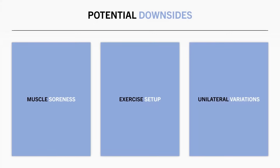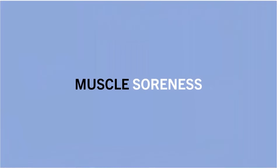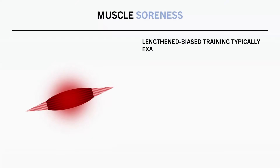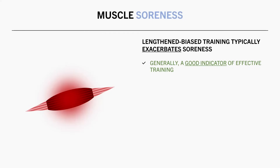So while lengthened-biased training generally seems to be beneficial for muscle growth, there are some potential downsides to be aware of. There are three potential limitations which may apply in certain scenarios. The first is due to muscle soreness — lengthened-biased training typically exacerbates the amount of muscle soreness we experience. In most cases, this is probably a good indicator that the training effectively caused disruption to the target muscle and provided a good hypertrophic stimulus, and is probably a good sign.